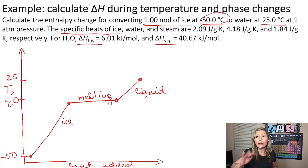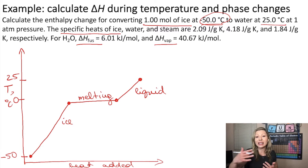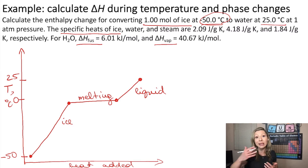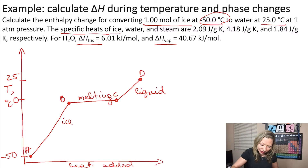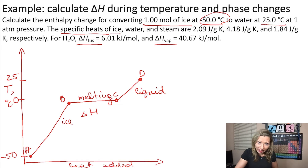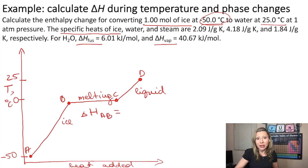When we talked about heating curves, we said that we can calculate the enthalpy change associated with the increase of temperature by multiplying the specific heat of ice — if we are heating up ice — times the mass of ice, and times the change in temperature. Let's call this part of the heating curve A to B, the melting is B to C, and the liquid part being heated up is C to D. Let's calculate the delta H for the A to B part.